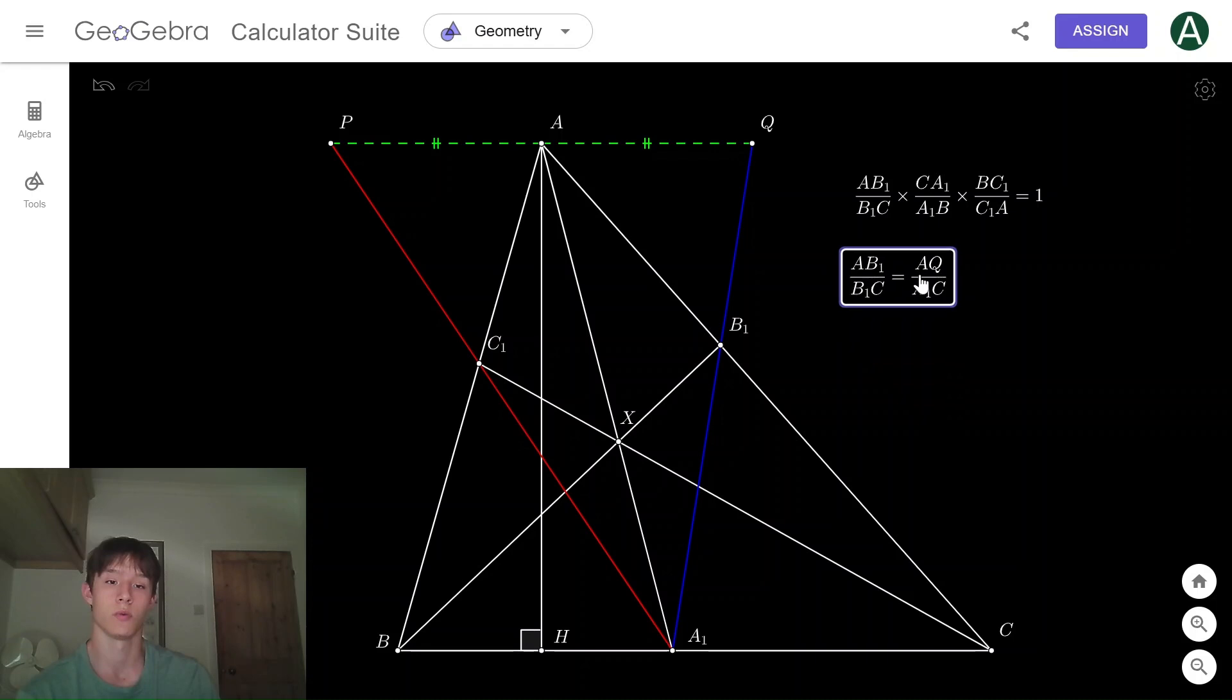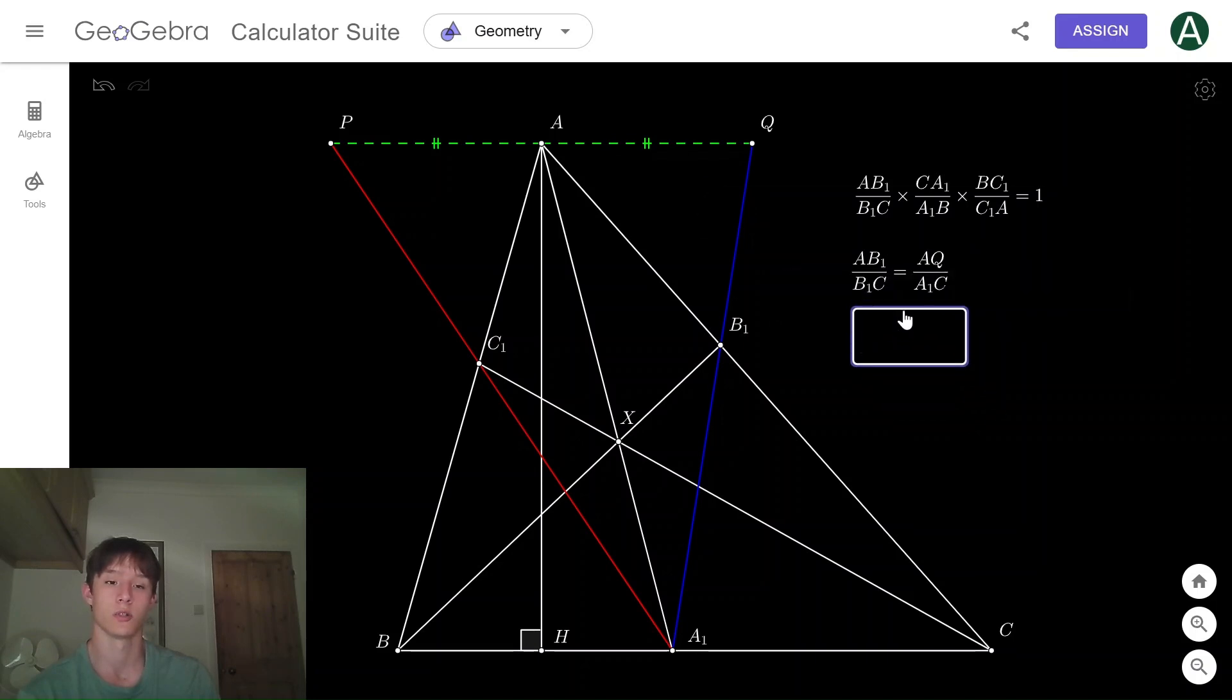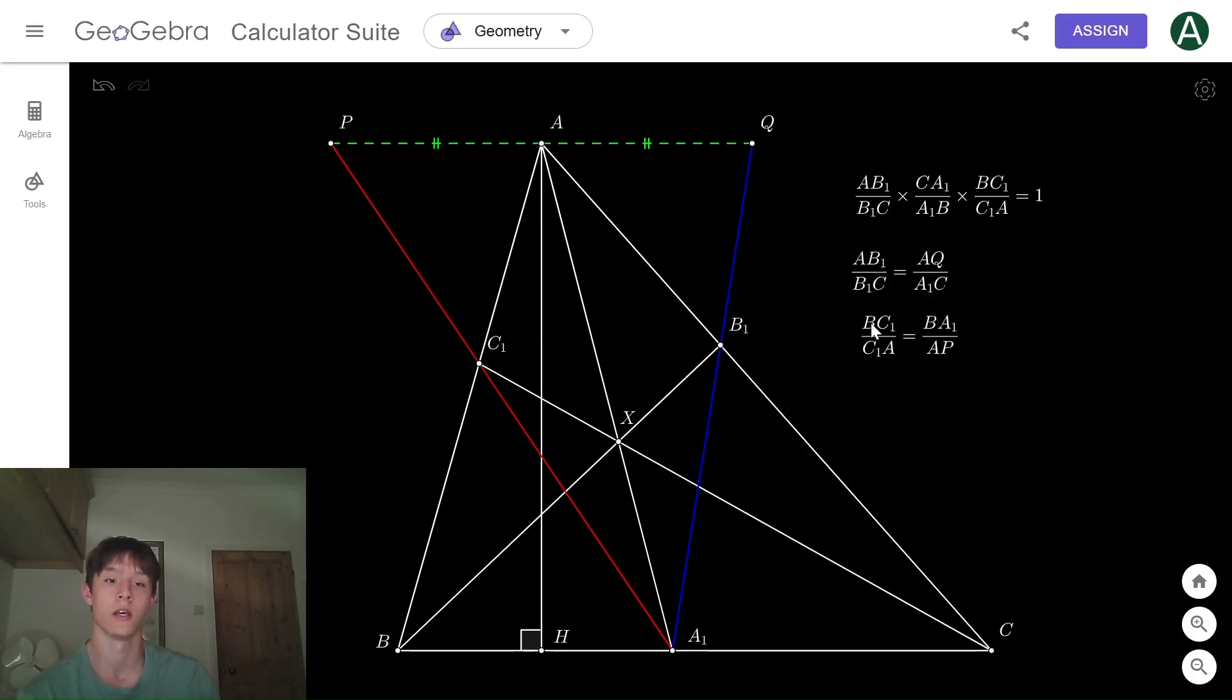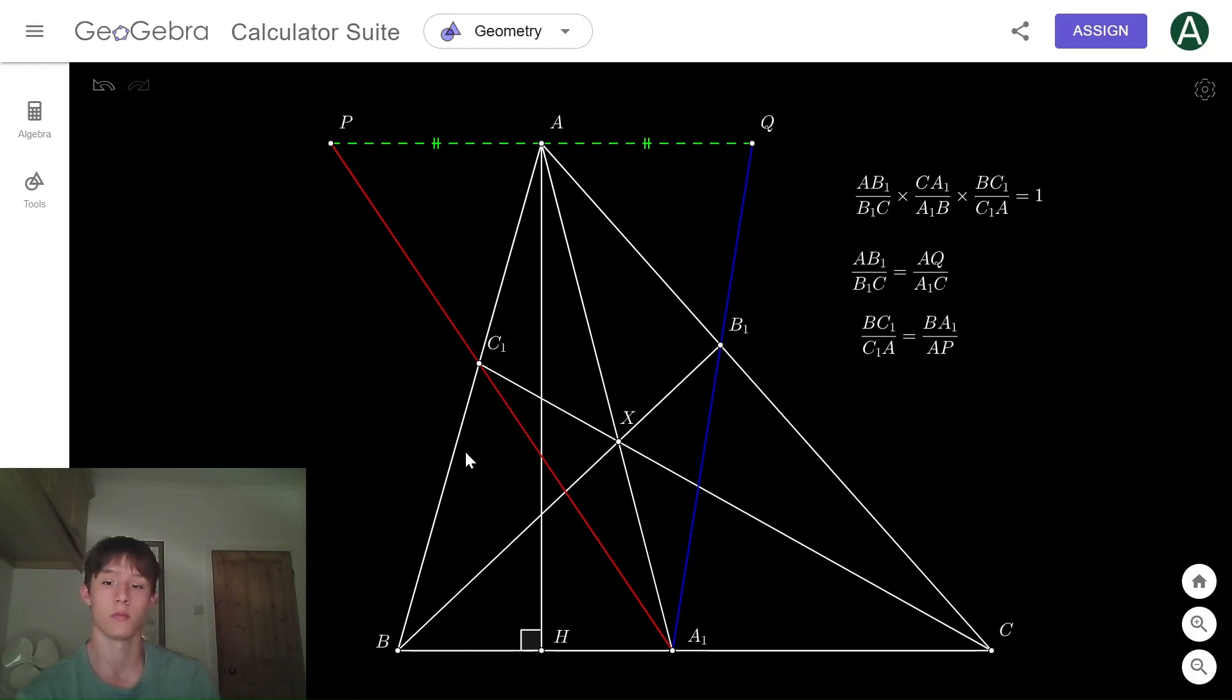Therefore, AB1/B1C is the same as AQ/A1C because triangles B1A1C and B1QA are similar. In similar reasoning, we can also show that BC1/C1A is the same as BA1/AP because triangles APC1 and BAC1 are similar.